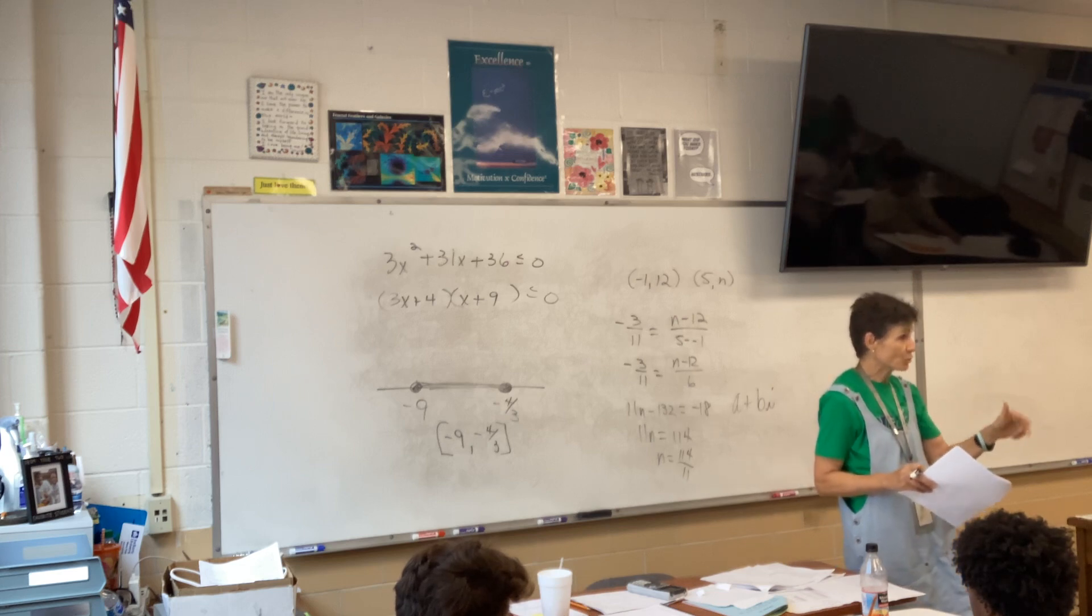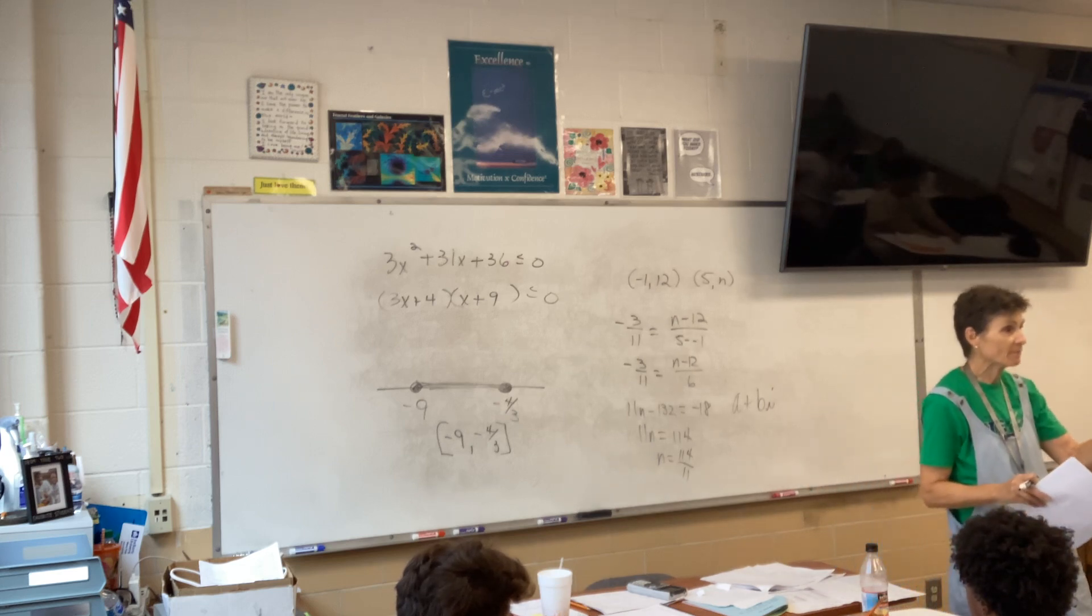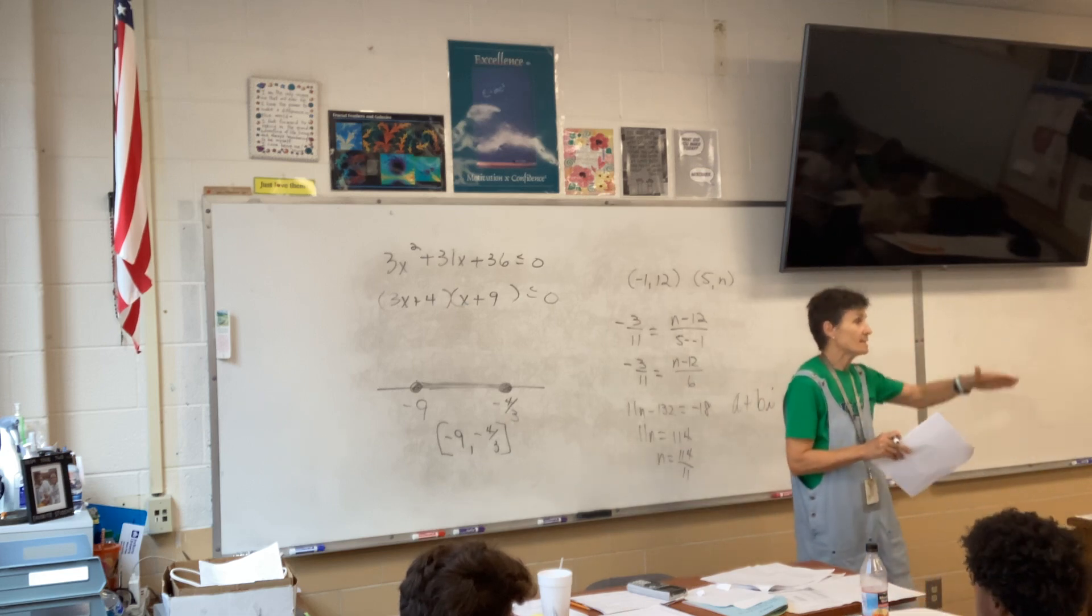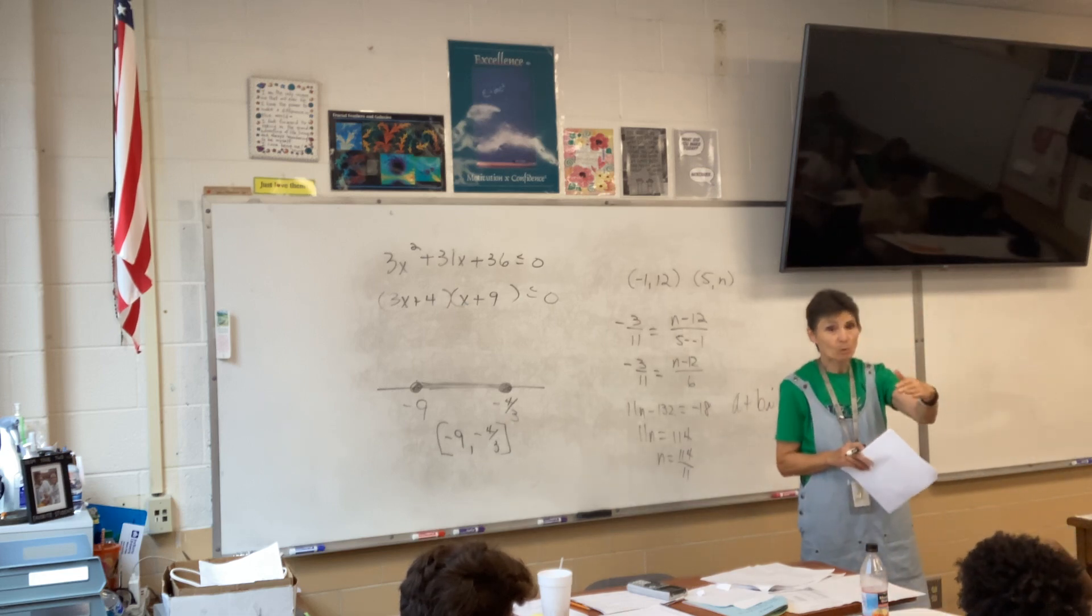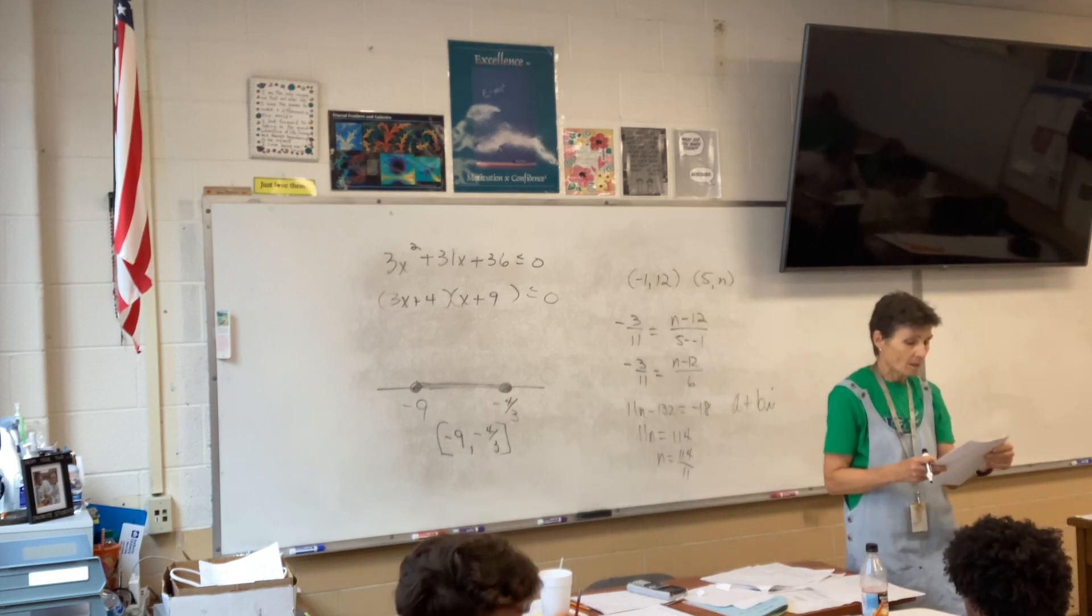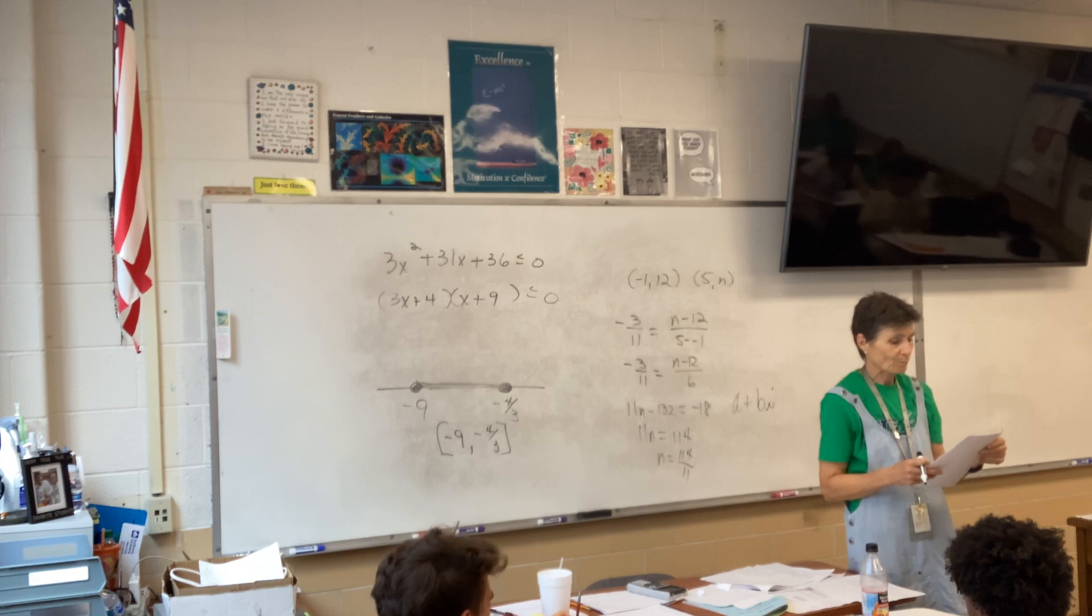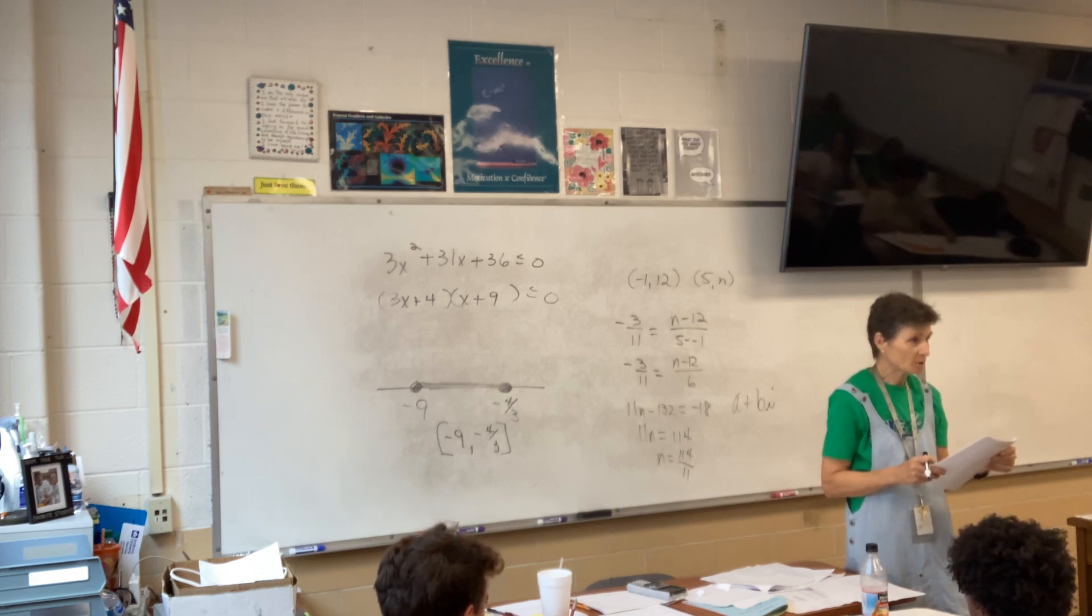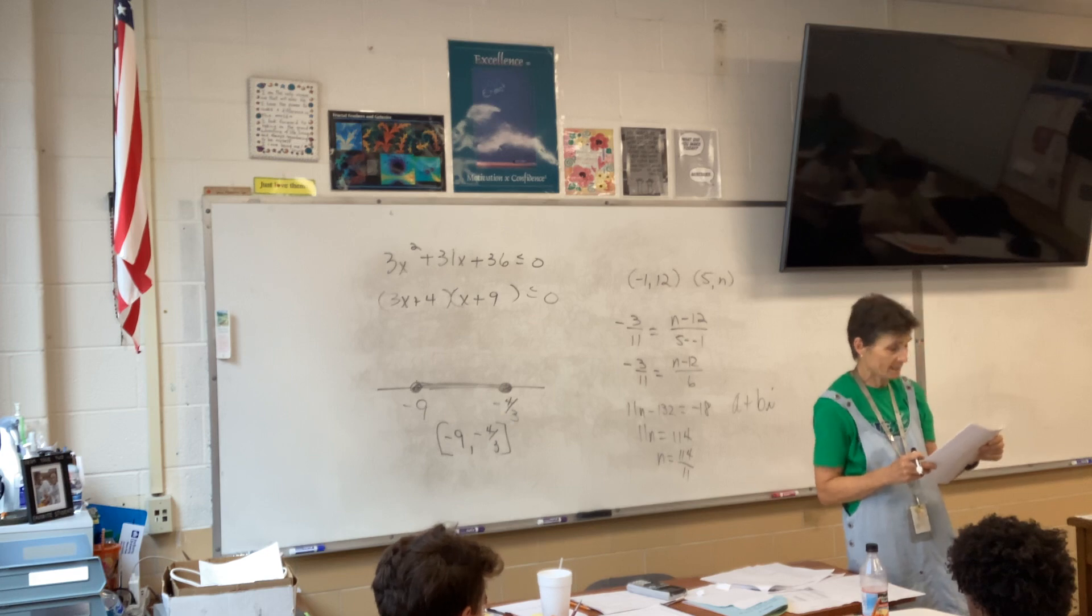There's two commutative properties, you have to identify which one it is. Addition or multiplication. The transitive is equality or inequality. This is the transitive property of inequality. All right. What's B? Multiplication property of equality.